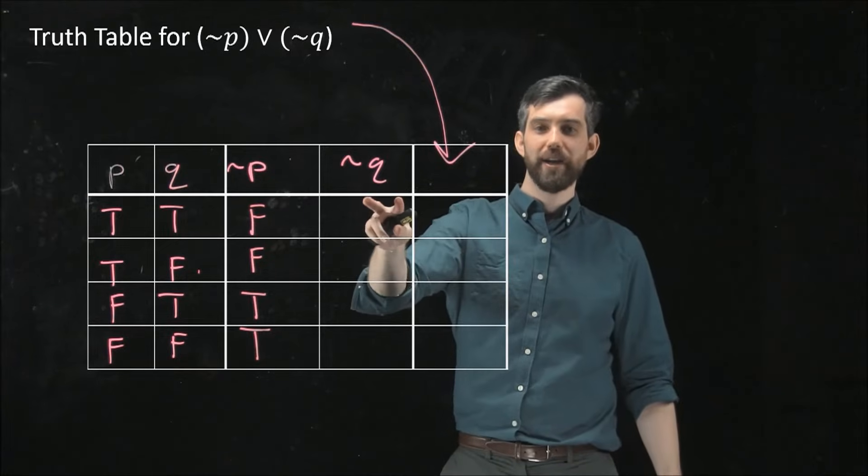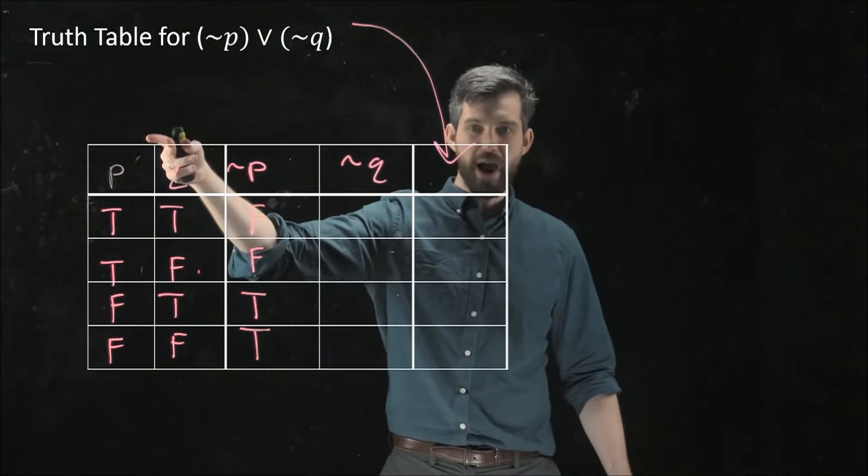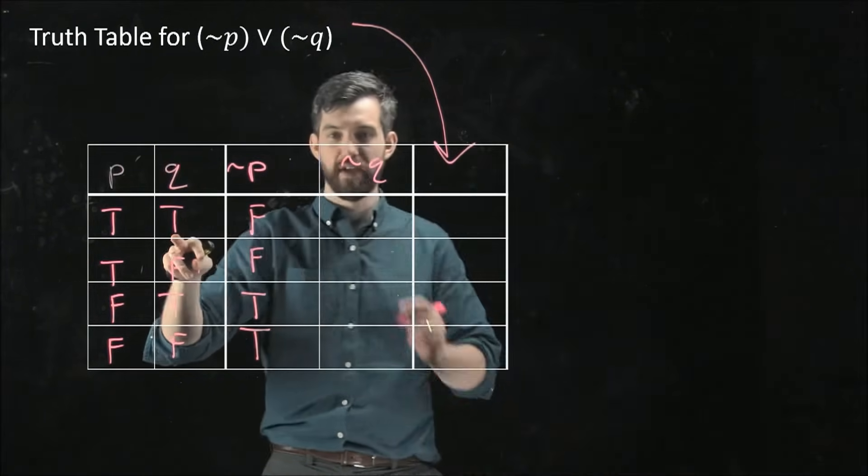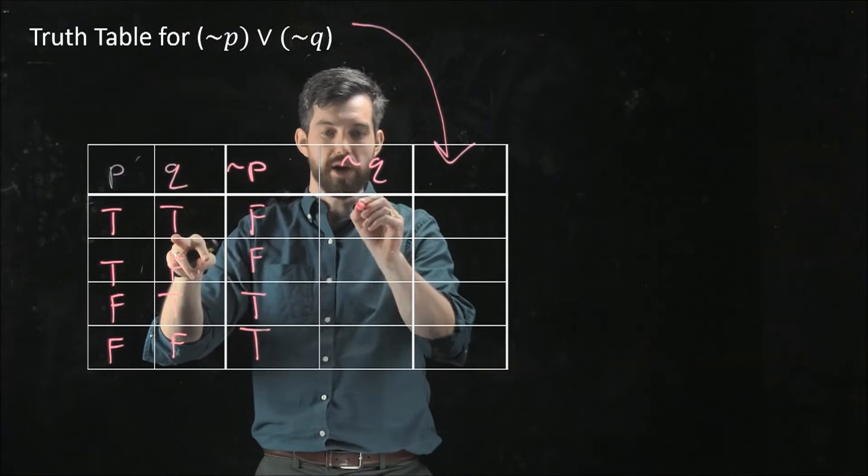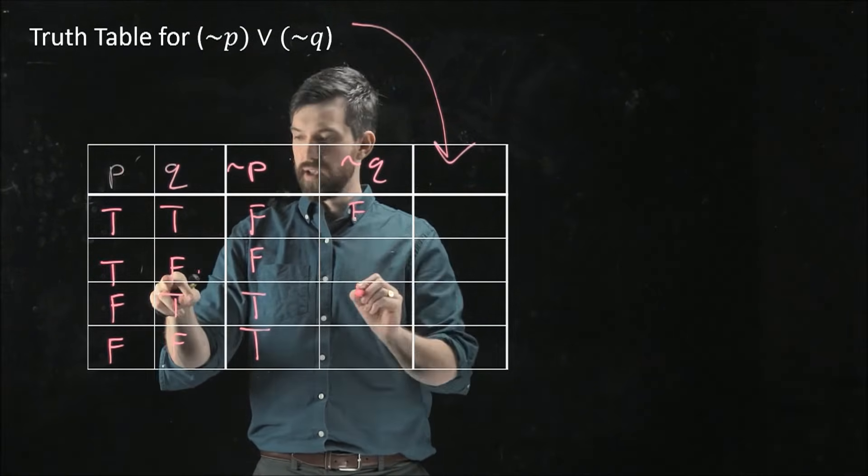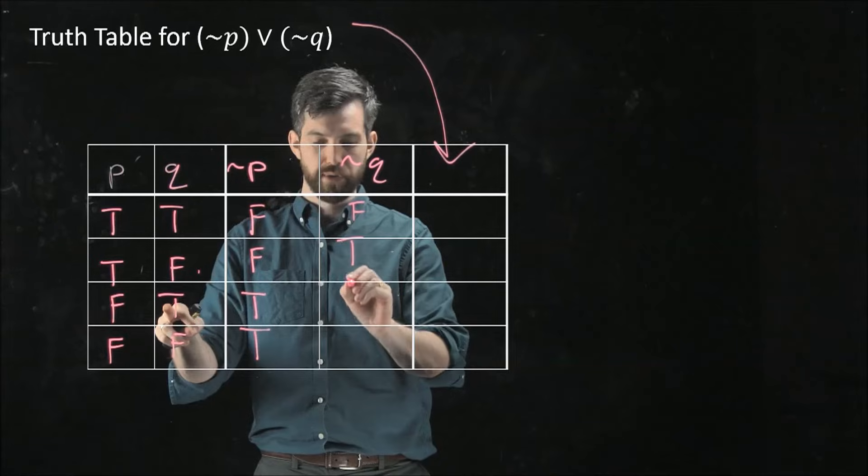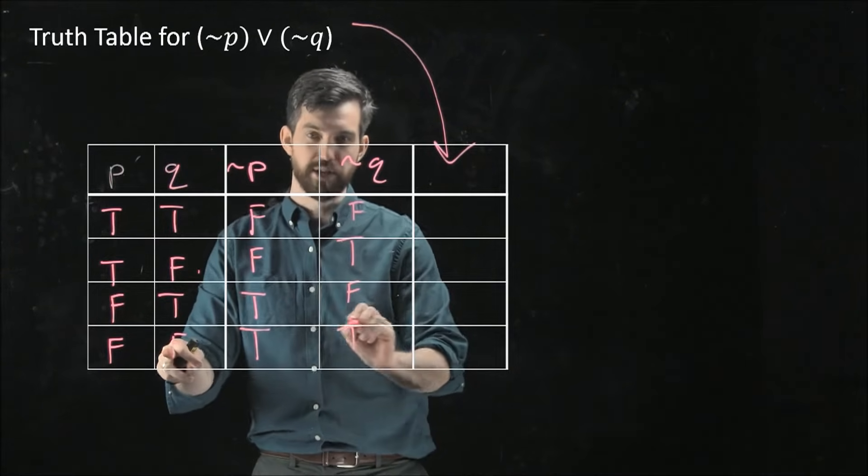Same with not Q. I just look at Q and then take the negation of every one. So if Q is true, then not Q is false. False turns into true, true turns into false, and false turns into true.